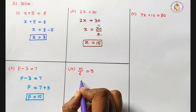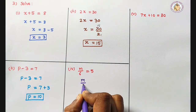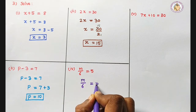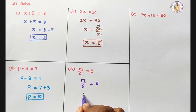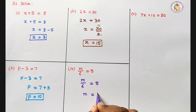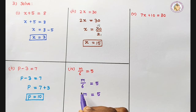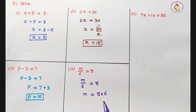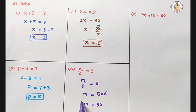Next: M divided by 6 equals 5. We want to find out the value of M. Here 6 is in division; bringing it to the other side means multiplication. So M equals 5 into 6, which is 30. The value of M is 30.